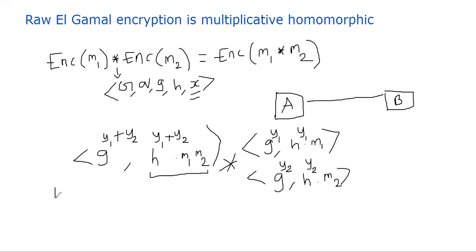So he's going to take H power Y1 plus Y2, divide means multiplicative inverse, times M1 M2 divided by G power Y1 plus Y2. And he raises X to it. So remember, H is nothing but, I recall here, H is nothing but G power X.